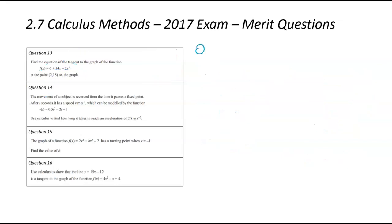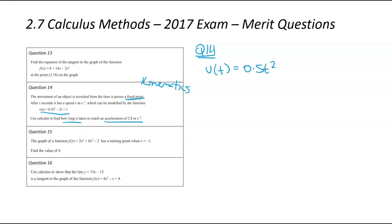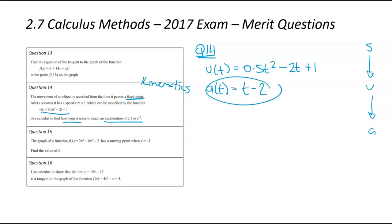Question number 14. The movement of an object past a fixed point — you've got to be thinking kinematics when you see that phrase in your exam. After t seconds it has this velocity: 0.5t squared minus 2t plus 1. We start with displacement, go down to velocity, then to acceleration. We've got the velocity and we need the acceleration, so we differentiate. Acceleration in terms of t equals t minus 2.